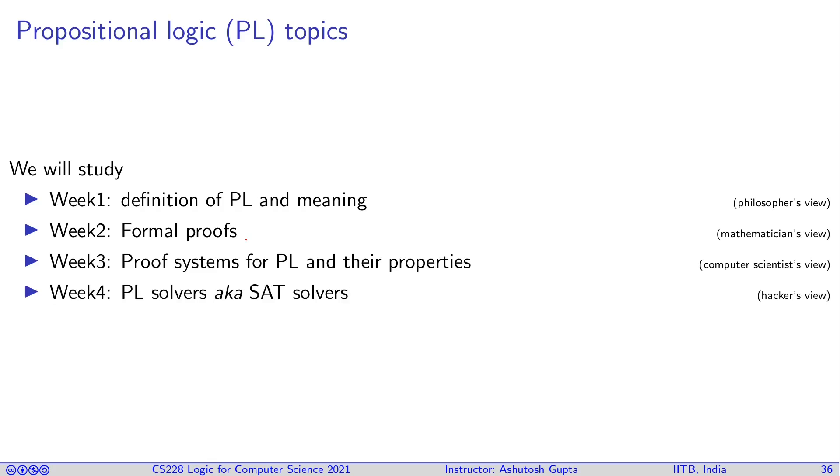In week four we will be looking at this algorithmization of proving correctness or validity of arguments, turning them into a program and seeing if we can really solve these arguments automatically using computers. These processes are called SAT solvers, and we will look at them also.